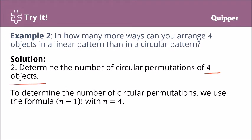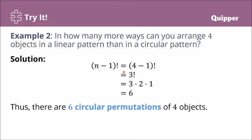Now let's determine the number of circular permutations of 4 objects. We use (n - 1)! with n = 4, so that is 3! = 6. Therefore, there are 6 circular permutations of 4 objects.